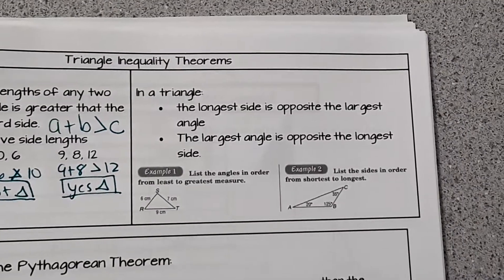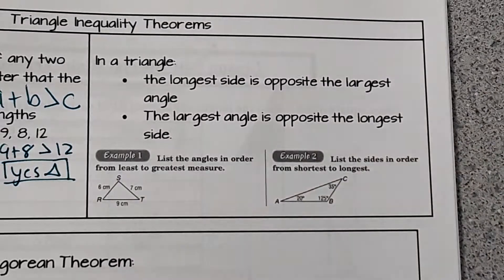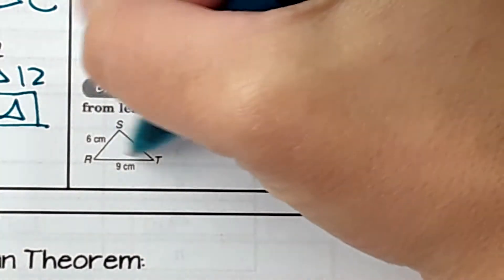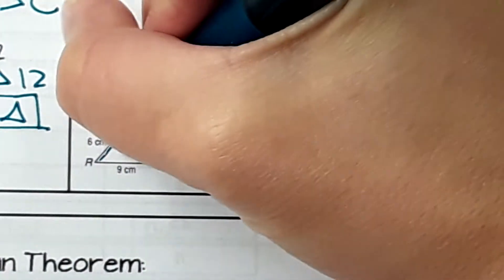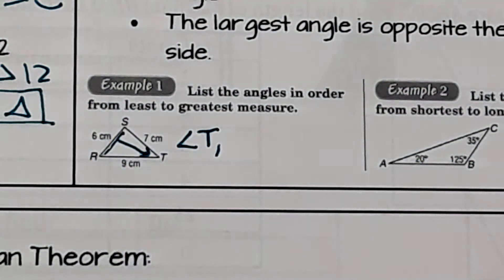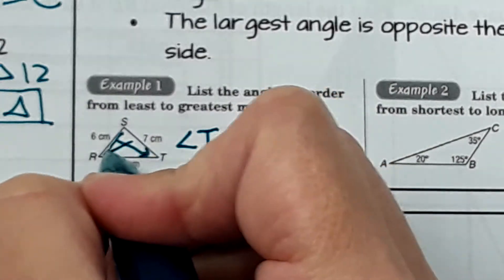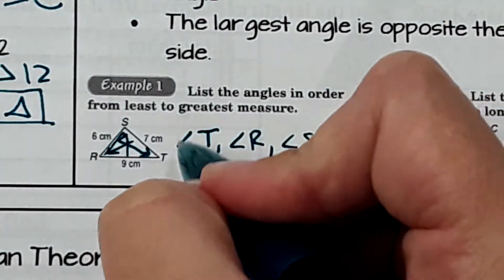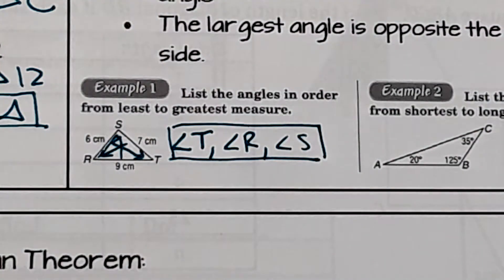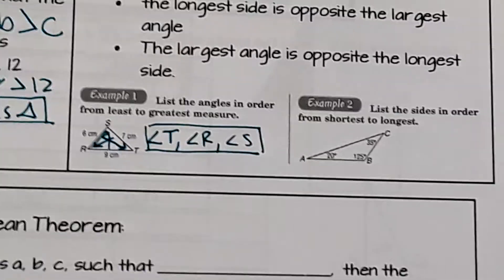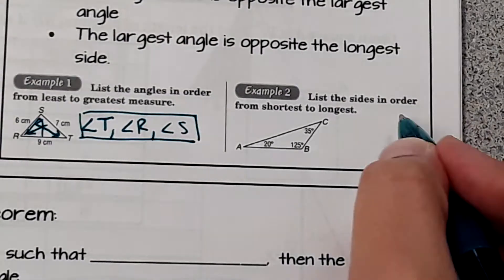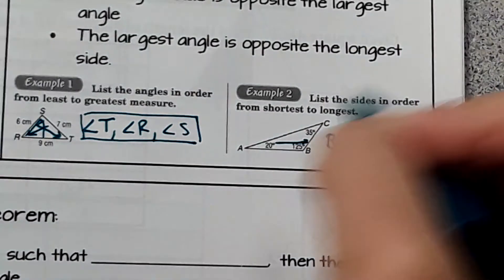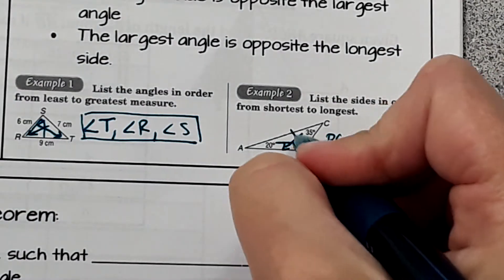The next concept: the longest side is opposite the largest angle, and vice versa. When we look at these examples, it's asking us to list the angles in order from least to greatest. The angle opposite the shortest side would be angle T, so that's the smallest angle. The second longest side gives angle R next. Then the largest angle is opposite the longest side, so it would be angle S. For example 2, listing sides from shortest to longest: segment BC, then segment AB, then segment AC.